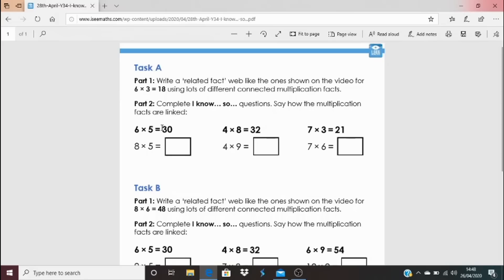For part 2, the suggested activity, are these questions here, and they're called I Know and So Questions. So, the idea is you don't just work out what the answer is, but you think, well, I can see the fact above. How is it linked to the one below? So, what's the link between 6 multiplied by 5 and 8 multiplied by 5? And explain that link.